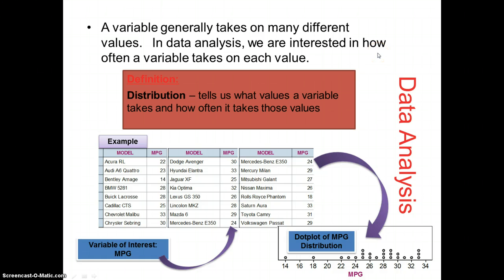This distribution tells us what values a variable takes and how often it takes those values. This one looks at the miles per gallon on various automobiles, and this dot plot here at the bottom shows that information, how the data is distributed, how the miles per gallon are distributed amongst these different automobiles.